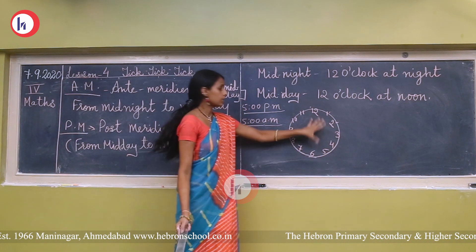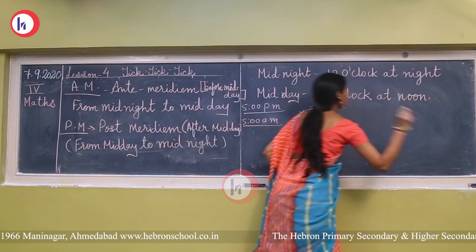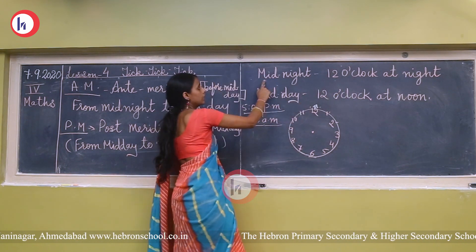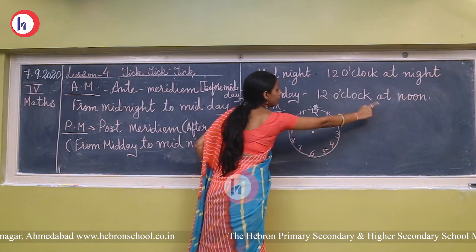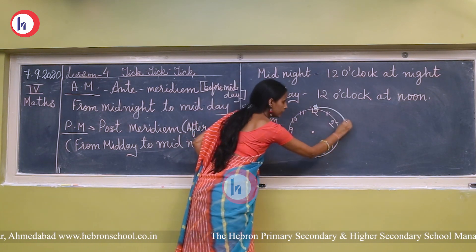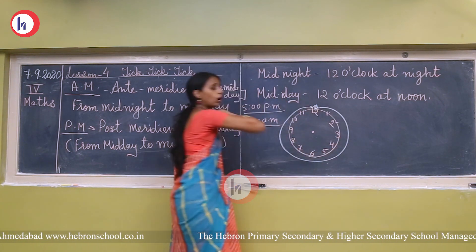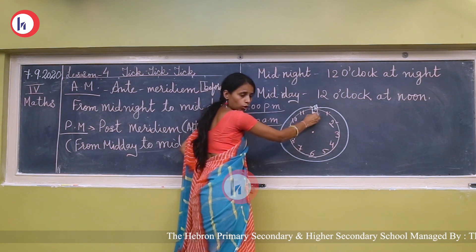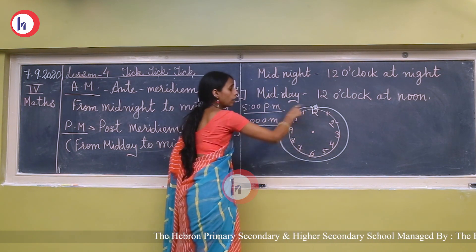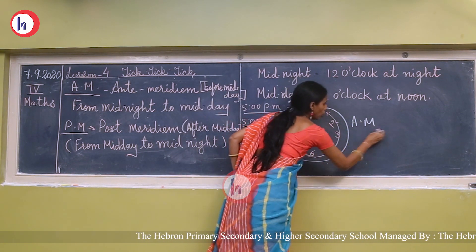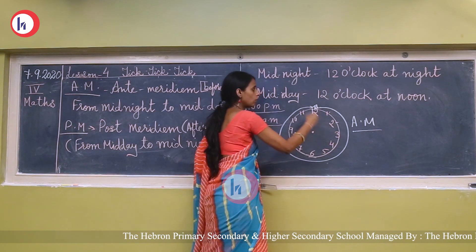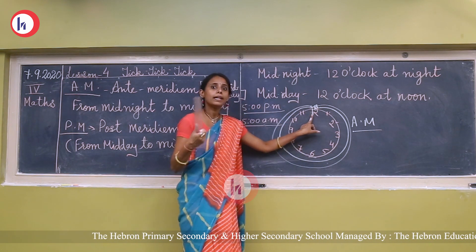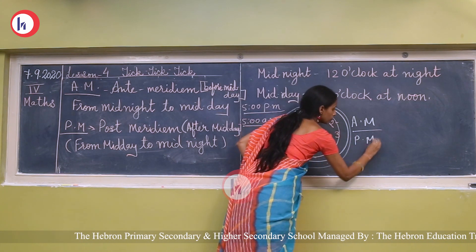Let's understand with this clock. It starts from 12 o'clock at night — that is called midnight. And 12 o'clock at noon is called midday. AM starts from midnight; when one complete round is done up to noon — that is AM. Then, after midday, when one complete round is done until 12 o'clock at night — that is called midnight — we write it as PM.